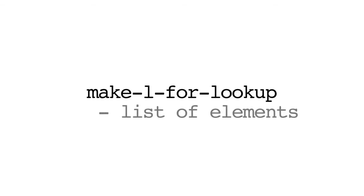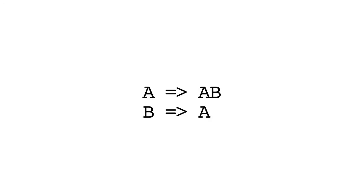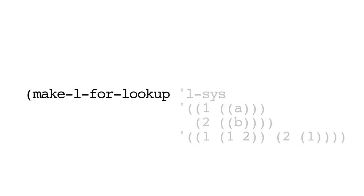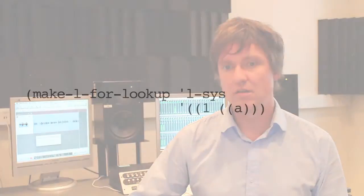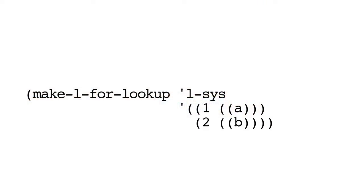First of all, we would create an L-for-lookup object by calling the make-L-for-lookup function. This requires a list of elements — the keys with their data — and a list of rules based on the keys of the elements. For example, if we wanted to create an L-for-lookup object based on the rules A returns AB and B returns A, we'd program it as follows. We call make-L-for-lookup with a name argument, 'elsys', then the list of elements — these are the keys with the data they return: A when we see 1, or B when we see 2. The third argument is the set of rules: 1 returns 1, 2; and 2 returns 1. So this corresponds to A returns AB and B returns A.